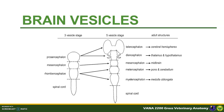The telencephalon will become the cerebrum. The diencephalon will become the thalamus and the hypothalamus. The mesencephalon will become the midbrain. The metencephalon will become the pons and the cerebellum, while the myelencephalon will become the adult medulla oblongata. The distal end of the neural tube will become the adult spinal cord.